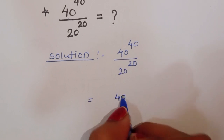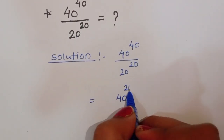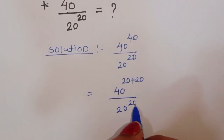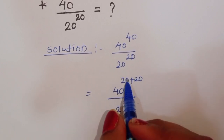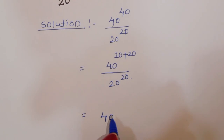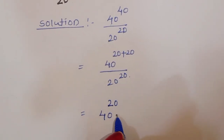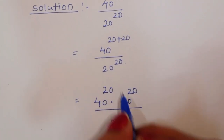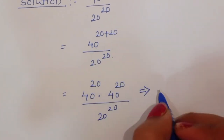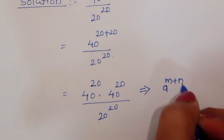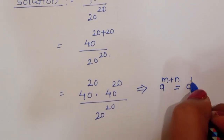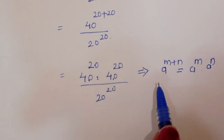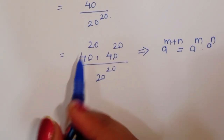We can write 40 power 40 as 20 plus 20 power 40, divided by 20 power 20. Then we split it as 40 power 20 times 40 power 20, divided by 20 power 20, because we know the formula: a power m plus n equals a power m times a power n.